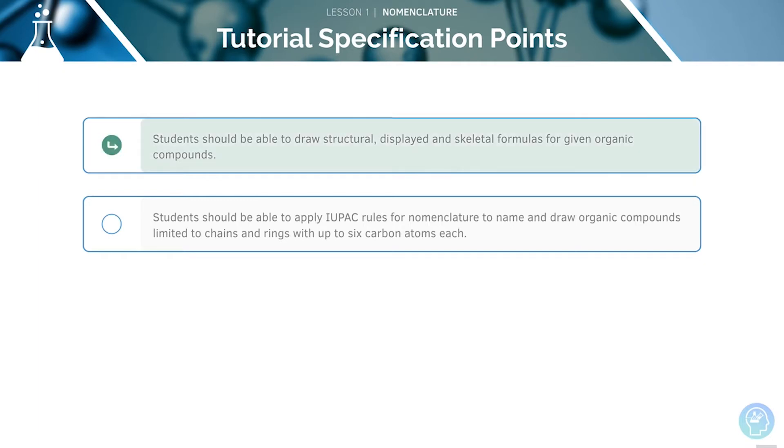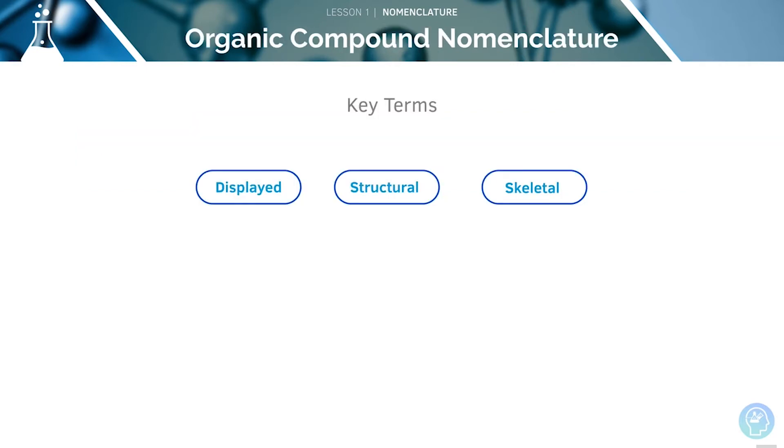We'll start by looking at how to draw formulae for certain organic compounds. There are three key terms that we'll be discussing in this section. There are three different types of formulae, which are displayed, structural and skeletal.